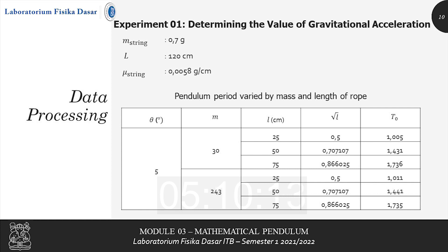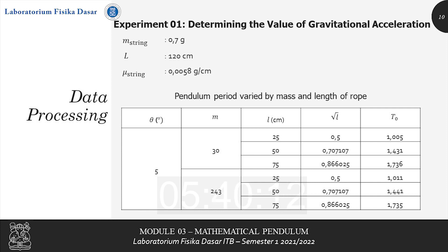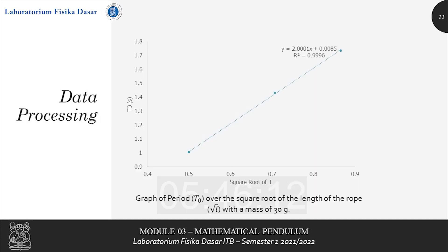We are going to use two mass variations: 30 grams and 243 grams. Note that in your own experiment you do not need to calculate the mass of your objects. For each mass, we vary the length of the string and then find the square root of the length and the corresponding t0, which is the period you count using a stopwatch. These data points will then be used to plot two different graphs for each mass variation.